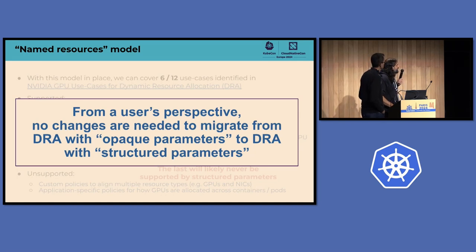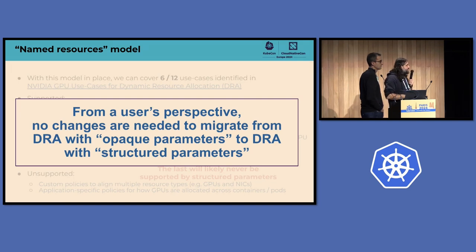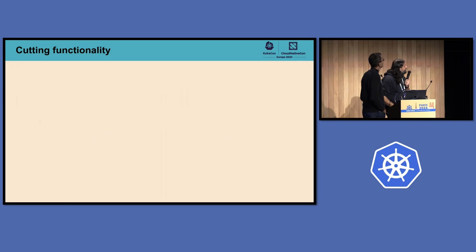One important thing to highlight: at least the way we've built this out for our GPU driver, from a user's perspective no changes need to be made to migrate from DRA with opaque parameters to structured parameters. Everything is handled behind the scenes. So if you've started playing around with the six use cases supported by opaque parameters and want to enable structured parameters, you shouldn't have to migrate any code. If you do, let me know, because that's against the design.